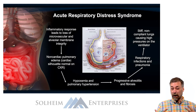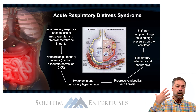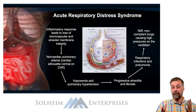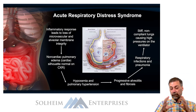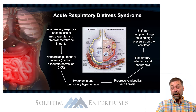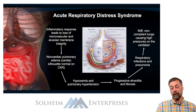In the lungs, those mediators are going to cause capillary permeability, and that's going to cause fluid to leak into the alveolar beds. The alveolar beds fill with fluid and you get a secondary pulmonary edema, which leads to hypoxemia. As the alveolar units fill with fluid, it causes pulmonary hypertension.